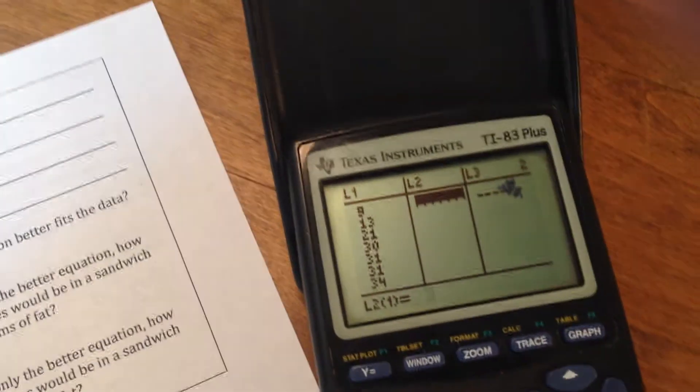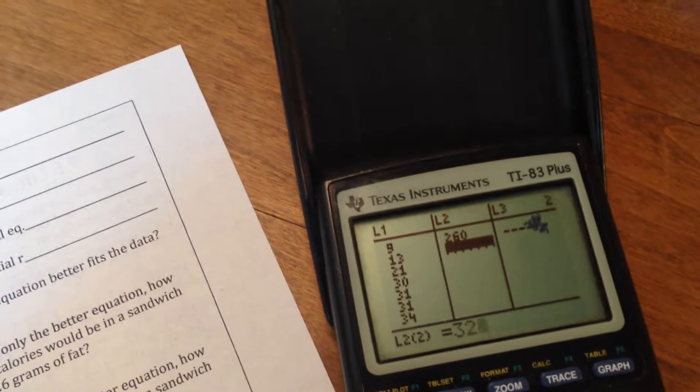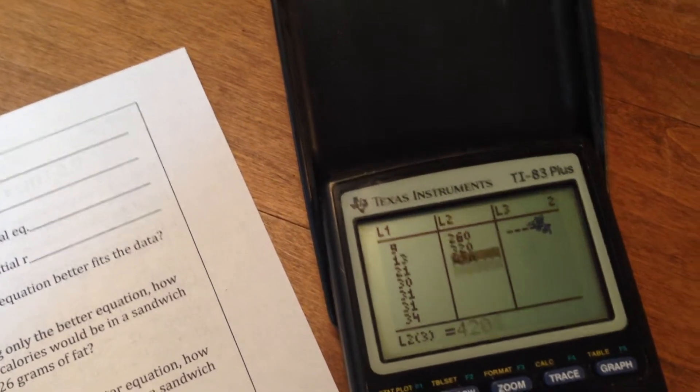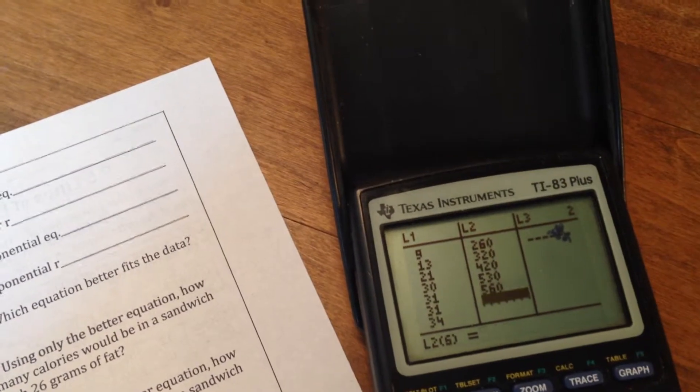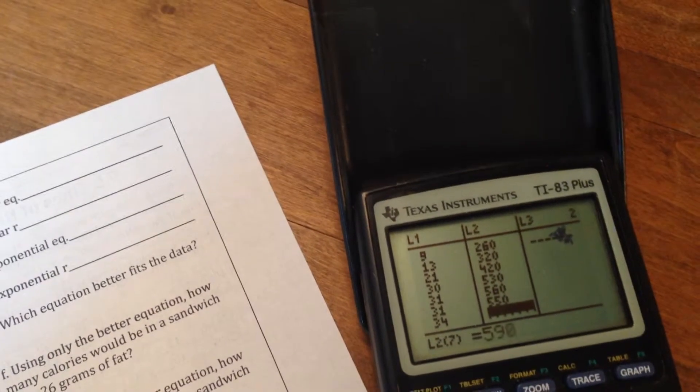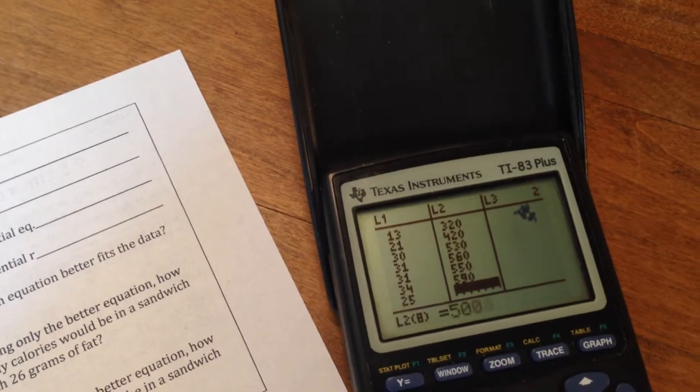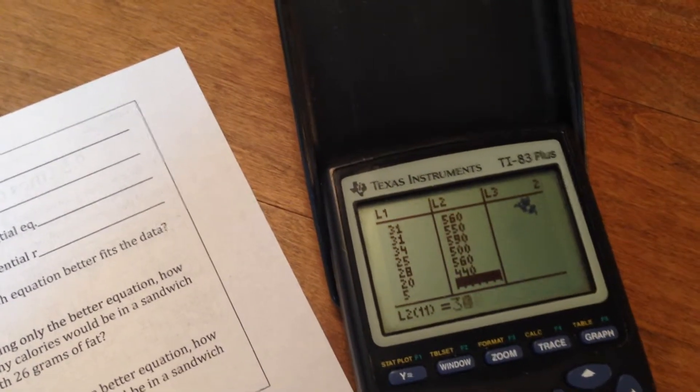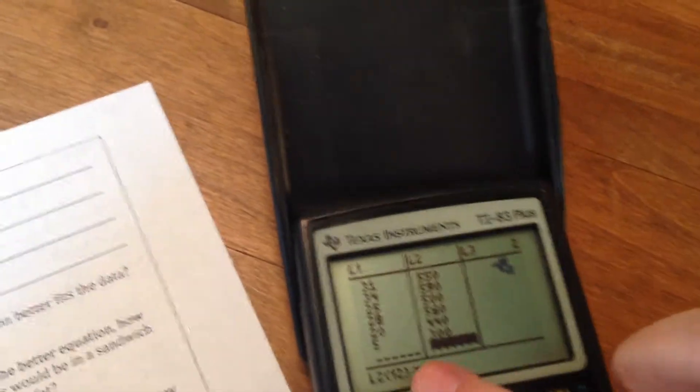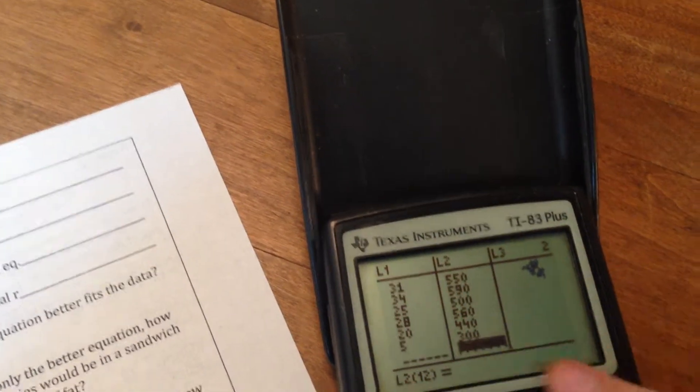Let's go over to L2 and do the same thing. So L2 should have 260, 320, 420, 530, 560, 550, 590, 500, 560, 440, and 300. And we can see that our numbers lined up perfectly, so we've done a good job.